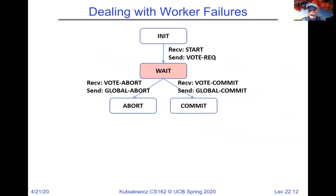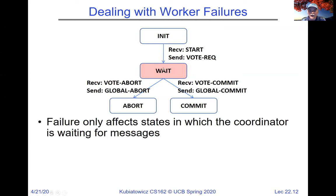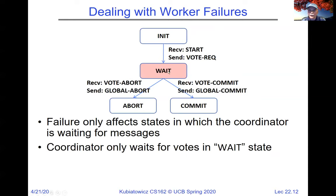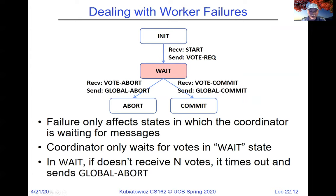How do we deal with worker failures? The failure only affects states in which the coordinator is waiting for messages. The coordinator only waits for votes in the wait state. If it times out or doesn't receive N votes, it times out and sends an abort. The protocol is set up so that whatever failure cases might happen, we will always keep the main constraint: either everybody agrees to commit or everybody agrees to abort. We don't get some doing one thing and some doing the other.